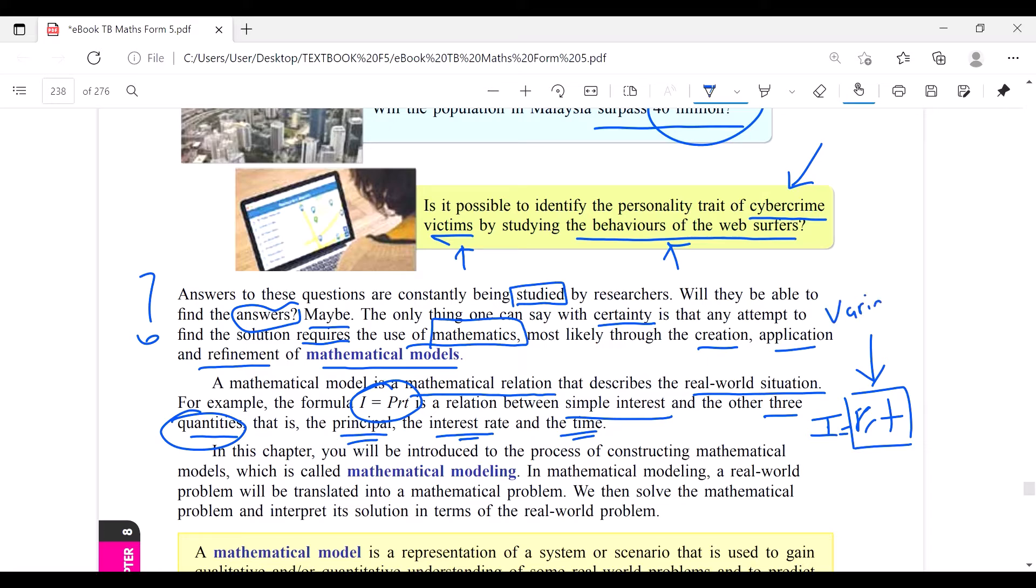The quantities change, that's why we call it variable. This is one example of a mathematical model and the relationship. We use this to solve many problems. Who discovered this formula is very brilliant.